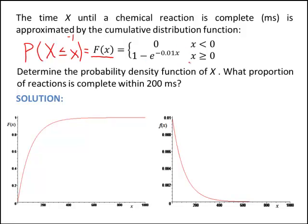If we put a number here in this range, let's say in this case x equals 100, the probability that the chemical reaction is complete in less than 100 milliseconds is given by F of 100, and I would just put 100 in here for x.